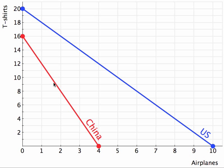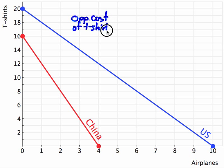They show all efficient combinations of t-shirts on the vertical axis and airplanes that the two countries can produce. Starting with the United States, let's calculate the opportunity cost of t-shirts. The opportunity cost of t-shirts in the US is given by the amount of airplanes that the United States gives up or sacrifices to produce the t-shirts.